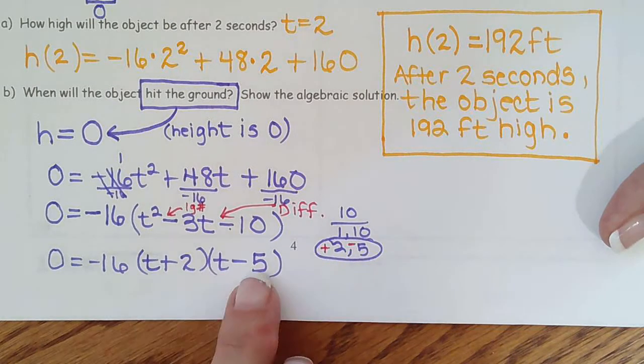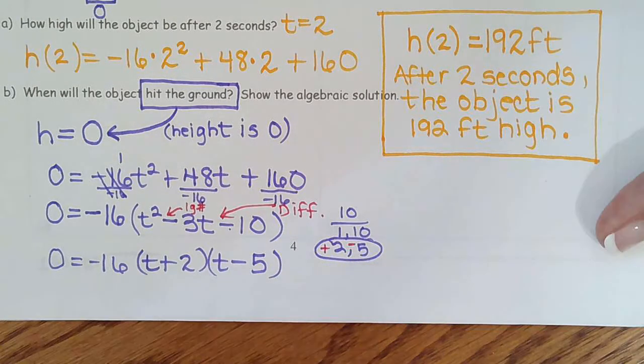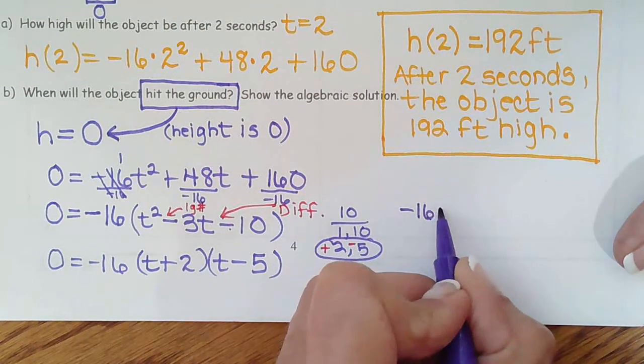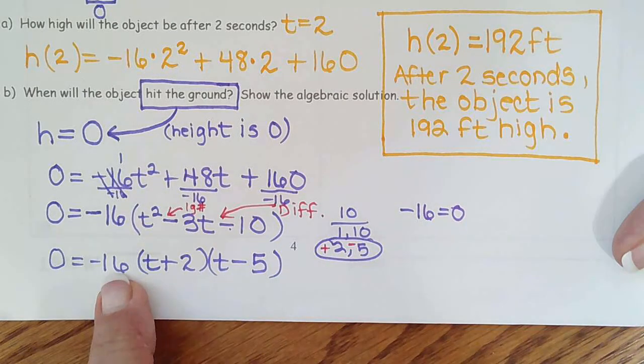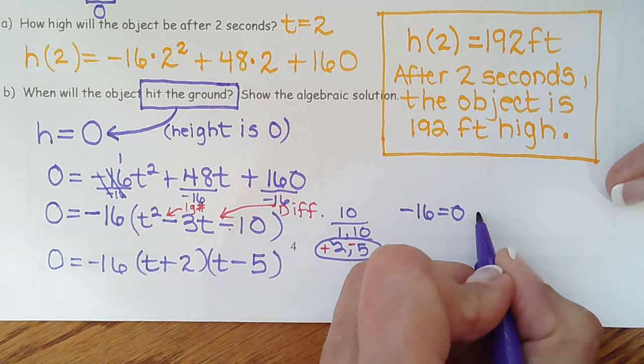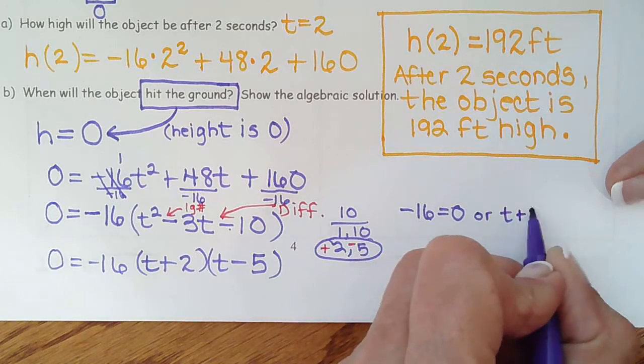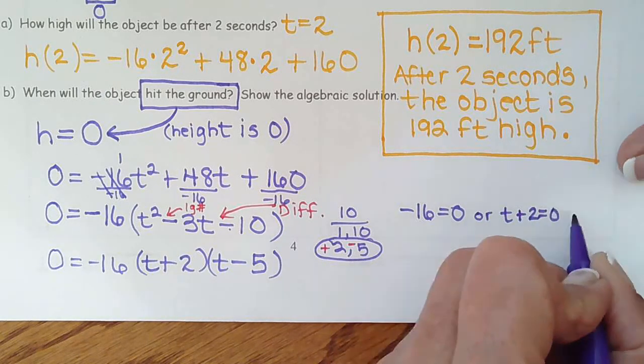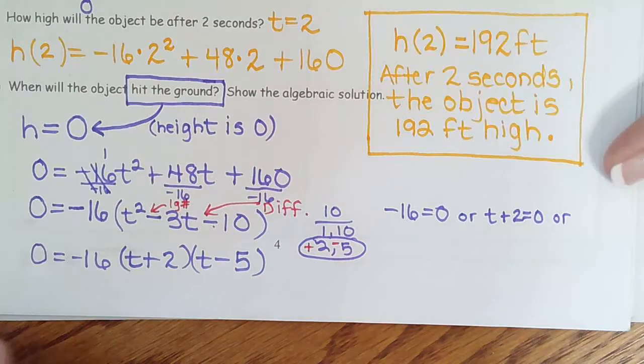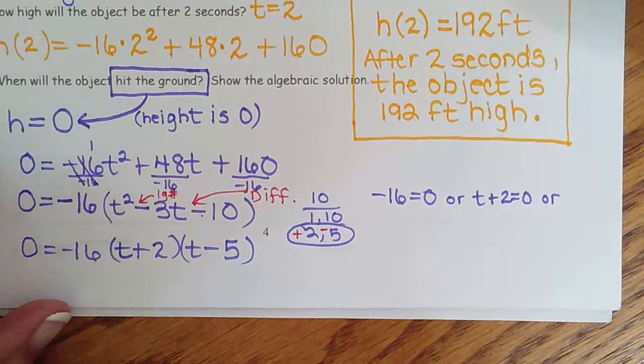if a times b times c equals 0, then either a is 0, the first factor, or b is 0, the second factor, or c is 0, the third factor, which is t minus 5.